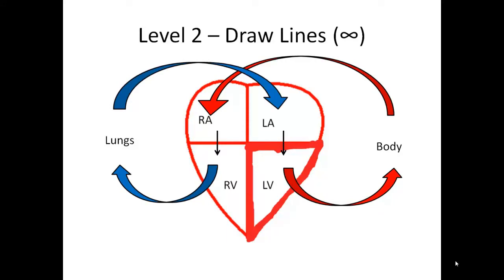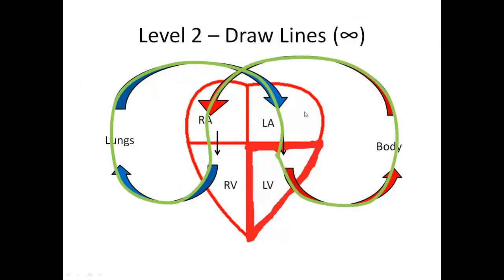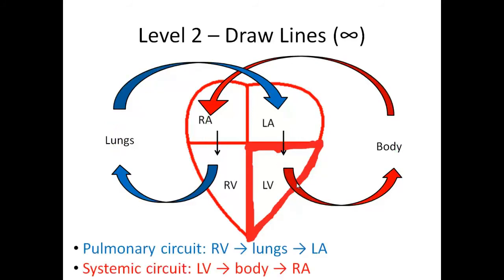If you look at the design with the arrows, you'll see that infinity sign — infinity has no beginning and no end. You go down, up and around, over, down, up and around. That's an easy way to decide how the arrows go. The pulmonary circuit starts in the right ventricle, goes to the lungs, and ends at the left atrium. The systemic circuit starts in the left ventricle, goes to the body, and ends at the right atrium. Pulmonary refers to the lungs; systemic refers to the body. That's it for level two.